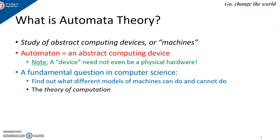Automata theory can be defined as the study of abstract computing devices or machines. It is also defined as an abstract computing device which is an automata. A device need not be a physical hardware — it is abstract, not existing, just an abstract machine. The fundamental computer science question lies here: find out what different models of machines can do and cannot do. The answer is the study of theory of computation.